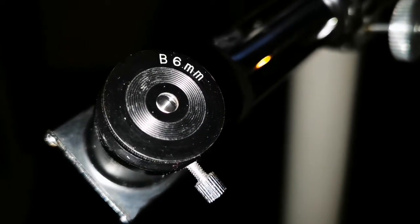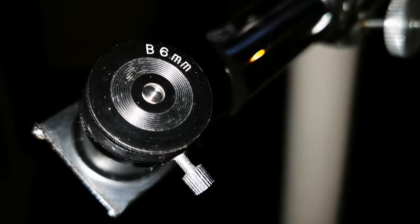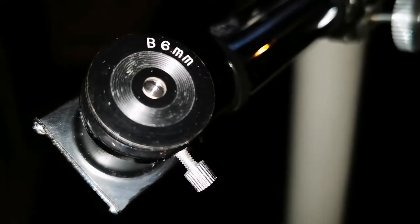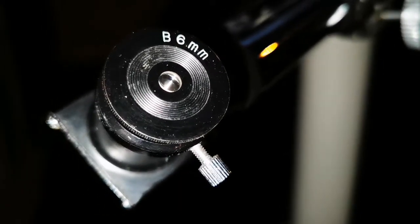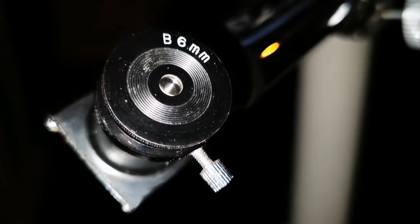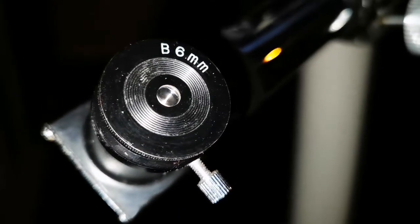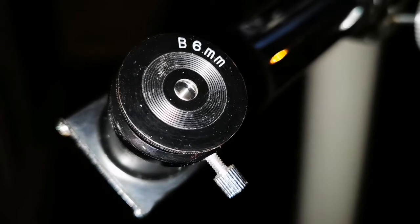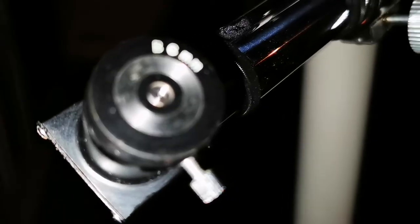Now I am using a Bertele 6mm which is equal almost to an orthoscopic in a way, but it is a Japanese style 0.96 inch. The image deteriorates, you don't see any more detail. Two bands, that's it.